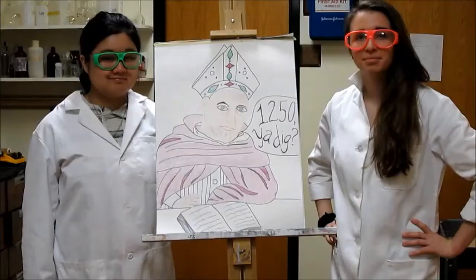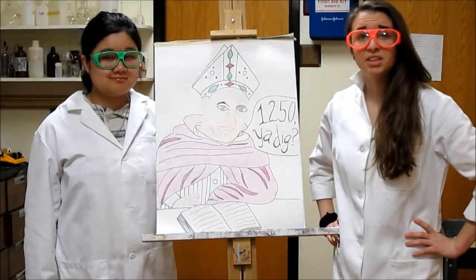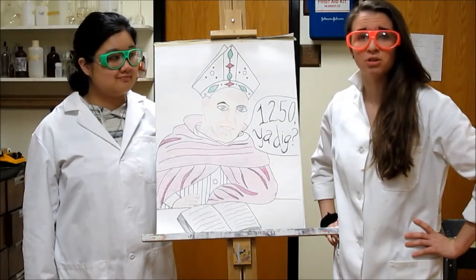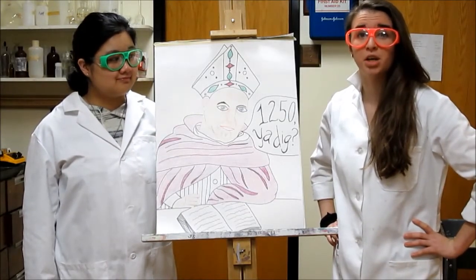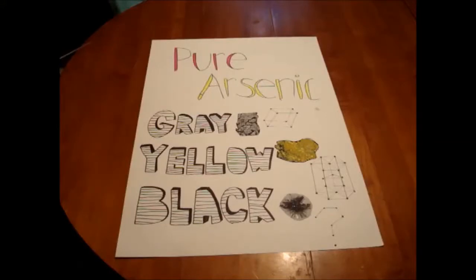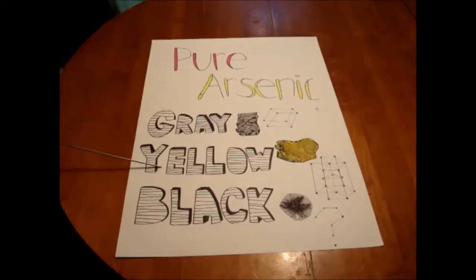The big difference to note is between pure arsenic and arsenic compounds. Pure elemental arsenic is not very harmful, but it's also not very common in nature and comes in three allotropes: gray, yellow, and black.